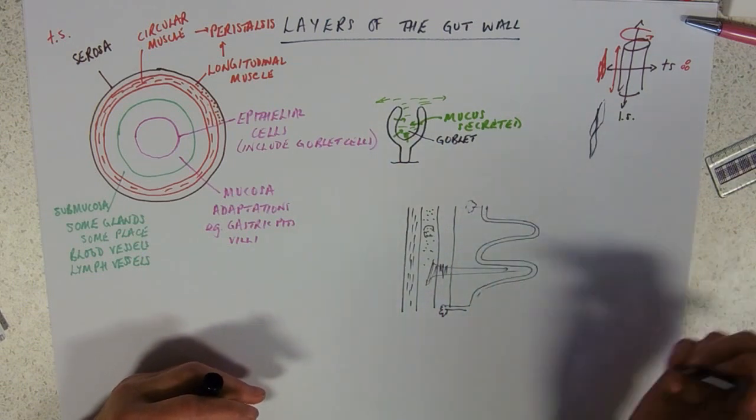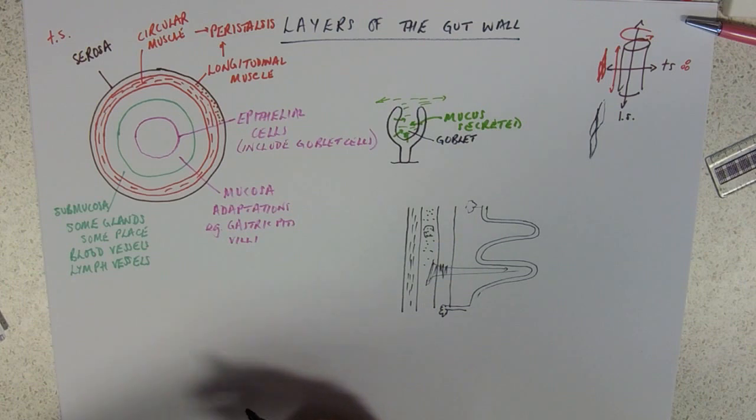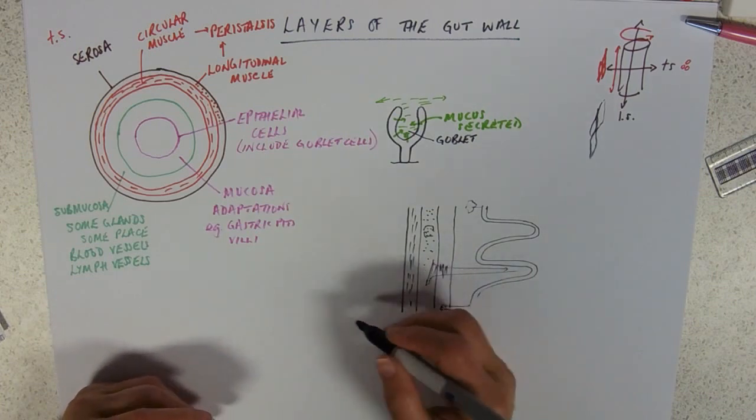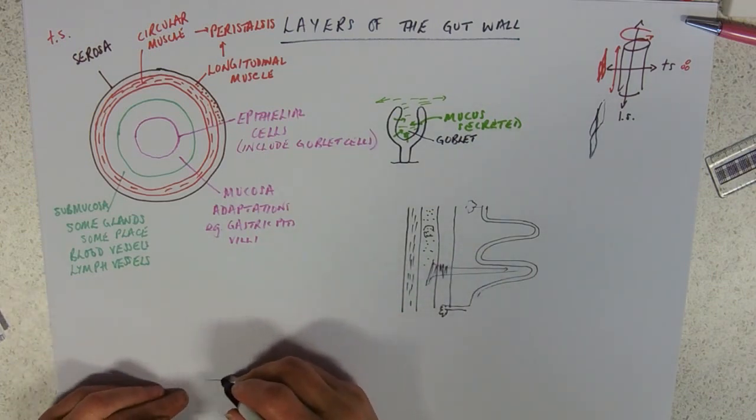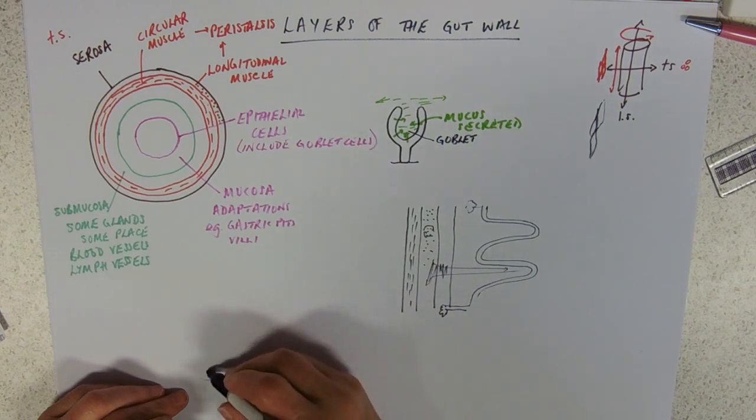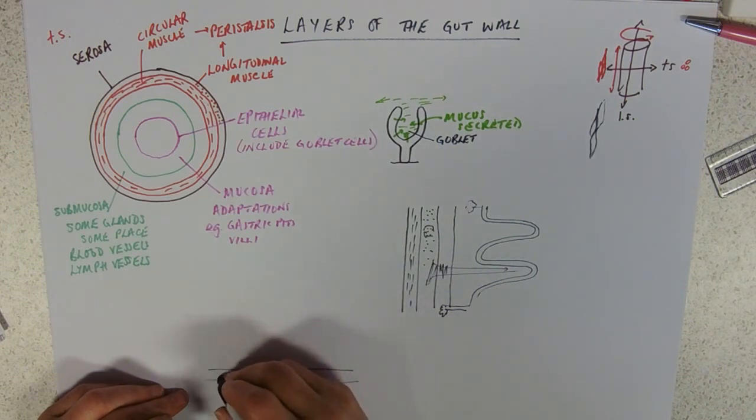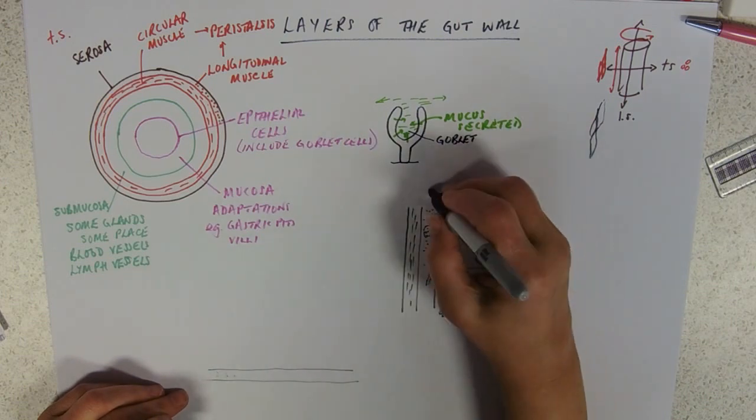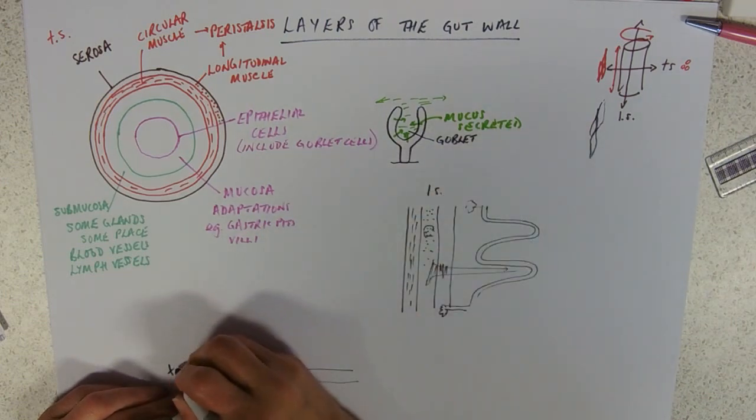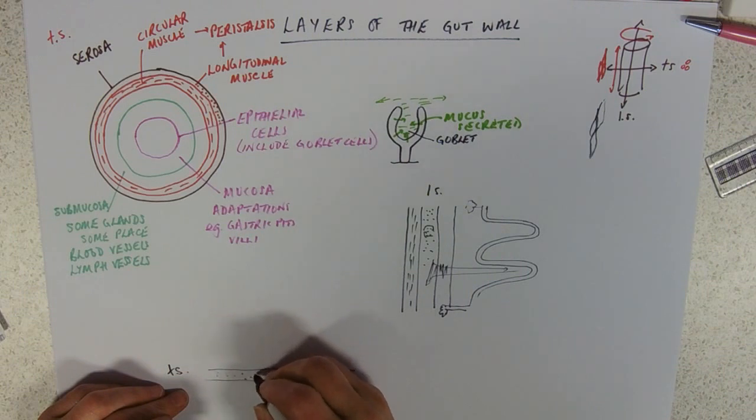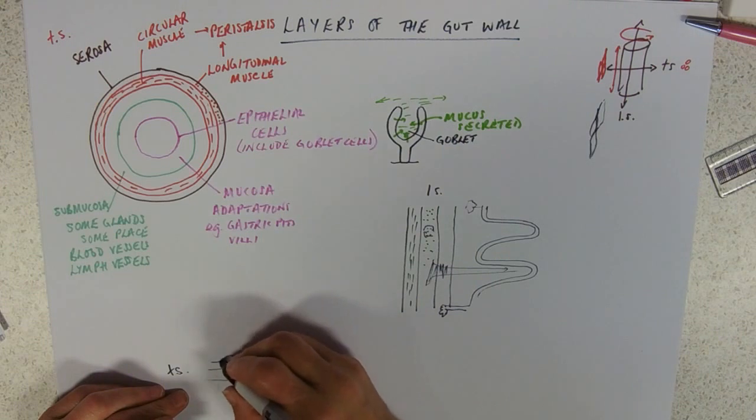If you're looking at a transverse section, you're probably looking at a little section. You'd have serosa, you'd be then looking at your longitudinal muscle. This would be a longitudinal section. Transverse section, longitudinal in transverse is going to look like little dots. Your circular muscle's going to look like little lines.